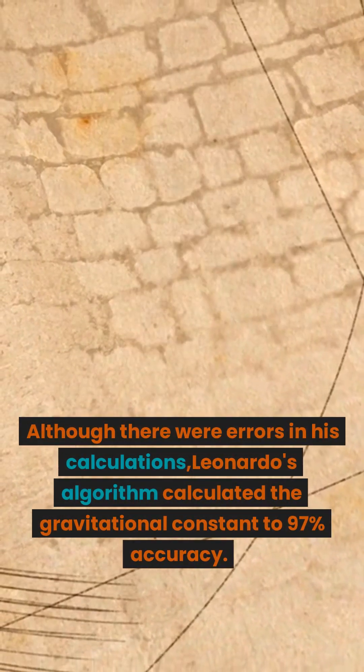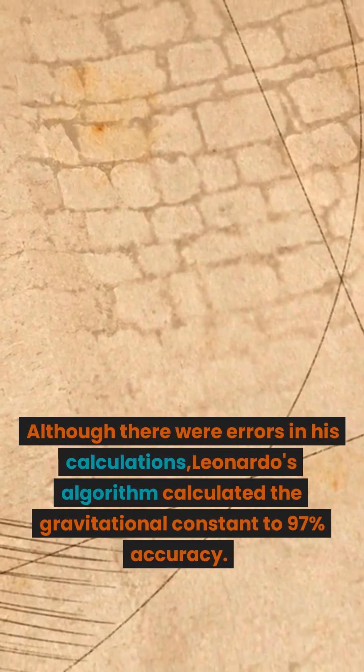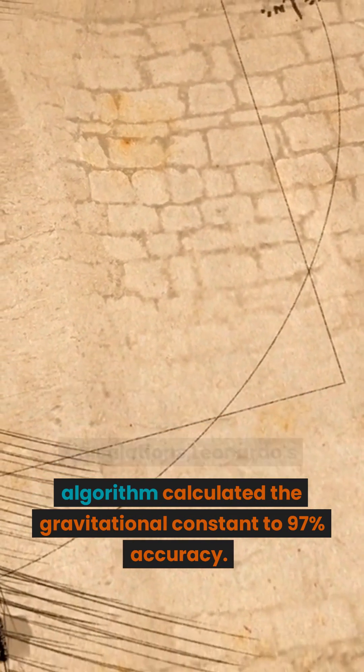Although there were errors in his calculations, Leonardo's algorithm calculated the gravitational constant to 97% accuracy.